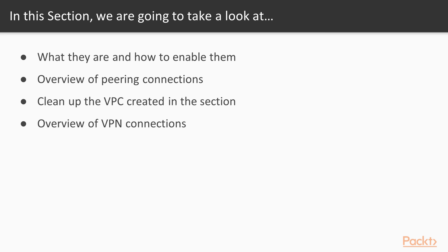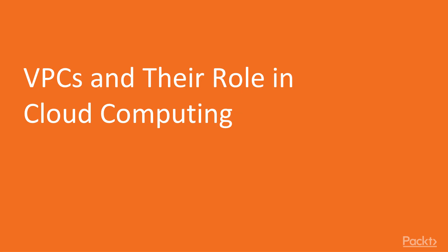I would encourage you to try and do all of this section as close together as you can in terms of time, otherwise you're going to start incurring some charges. And finally we'll look at some of the options we have for integrating our custom VPCs with on-premise networks — things like VPN connections and Direct Connect. So let's get started — VPCs and their role in cloud computing.